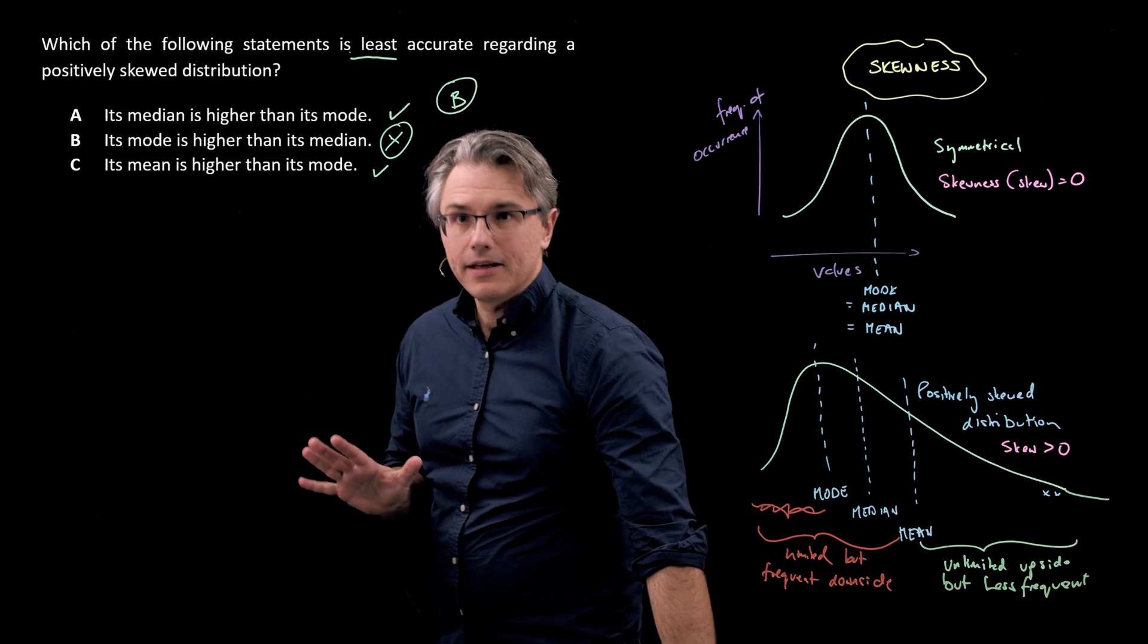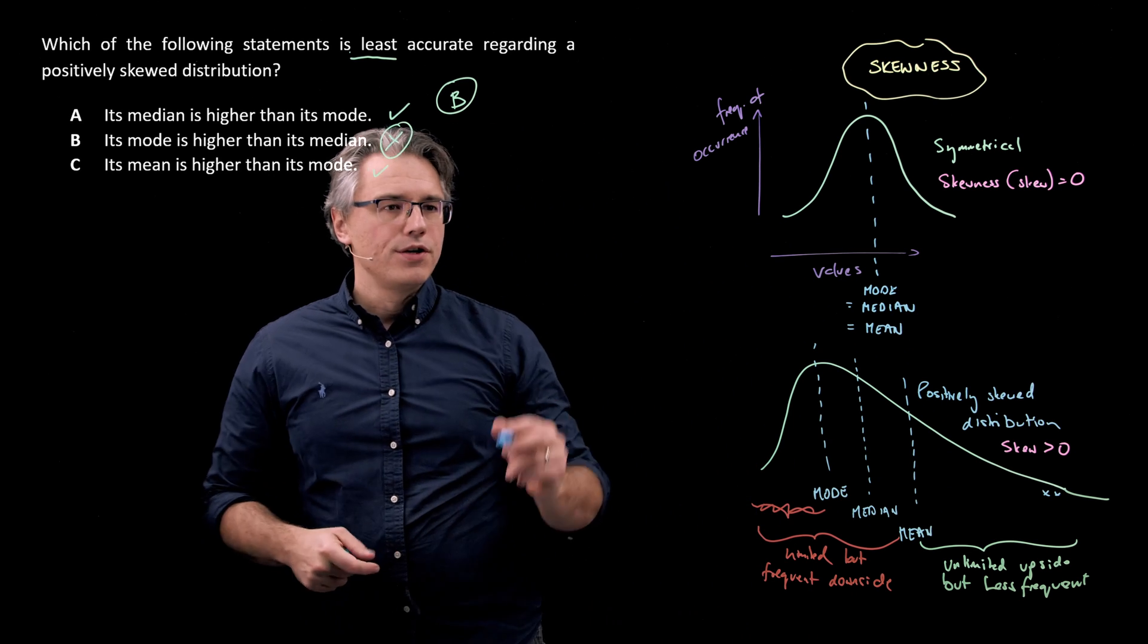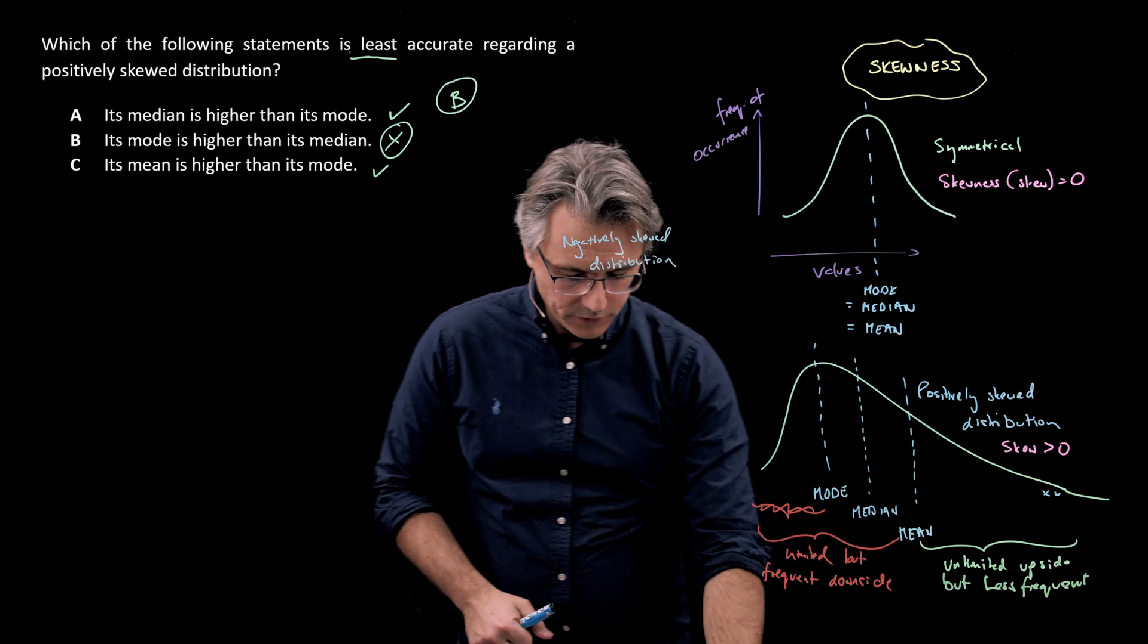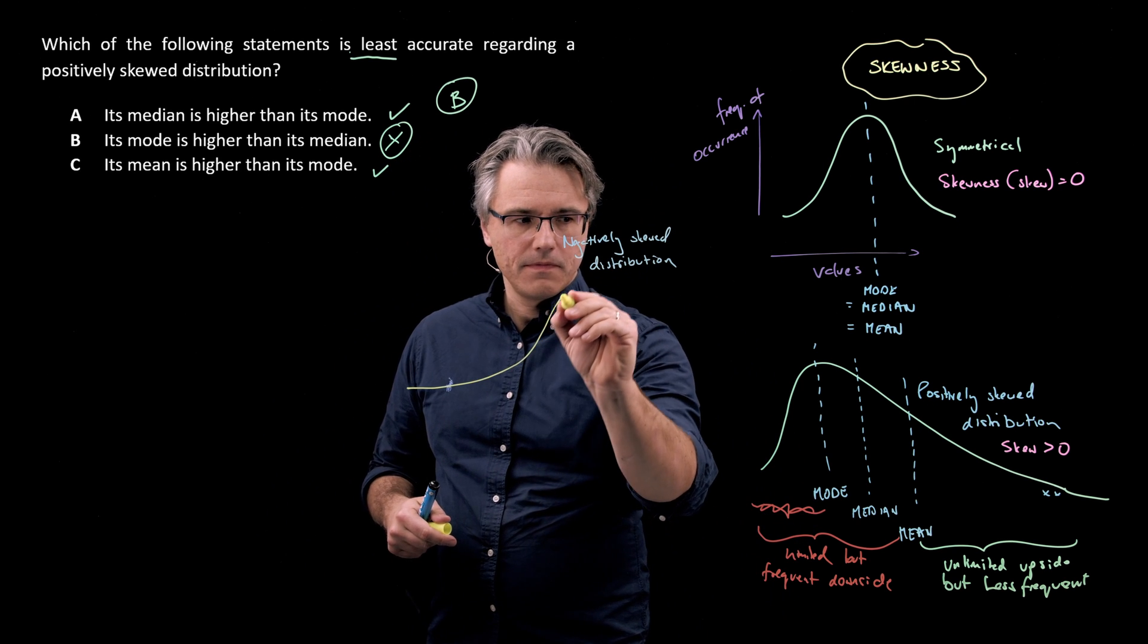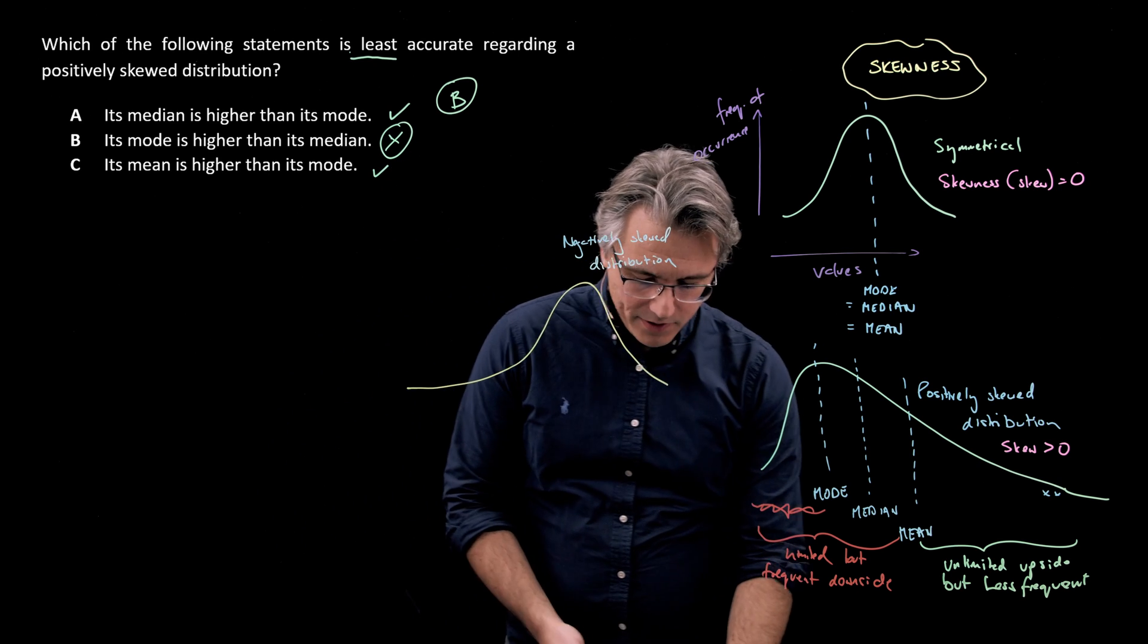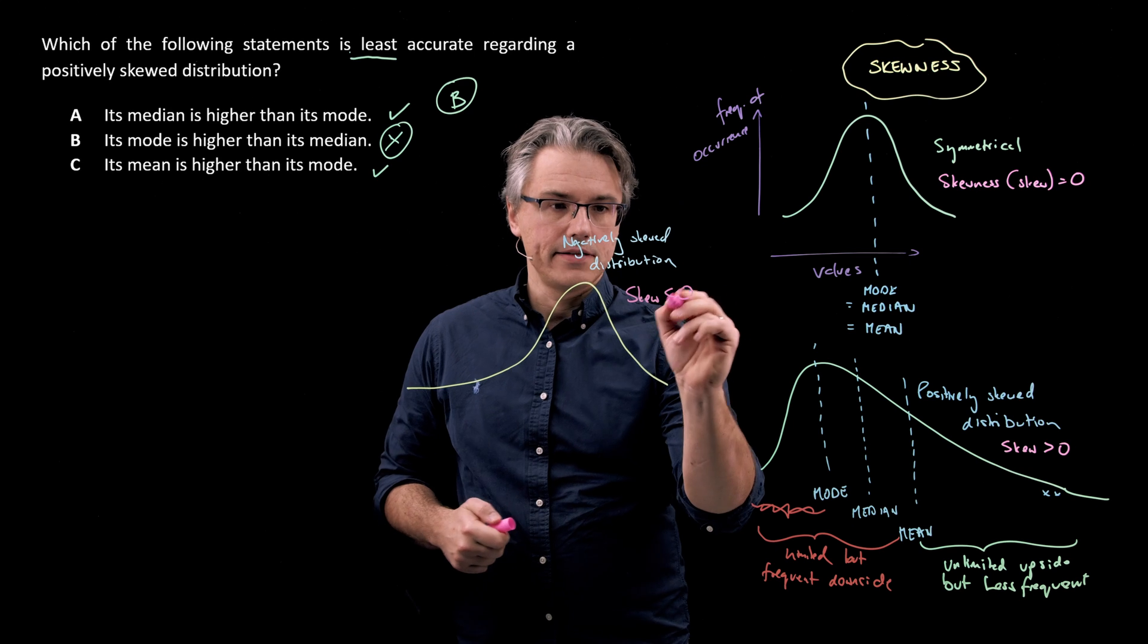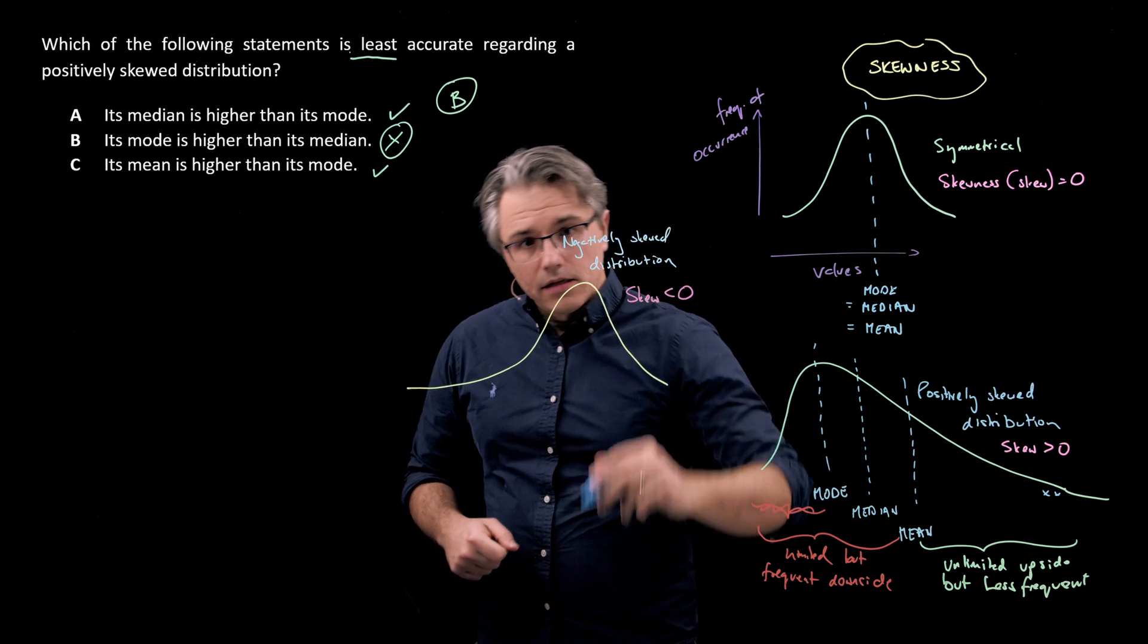Let's now translate this and complete the picture by showing you a negatively skewed distribution. And with this one, as you can imagine, we're going to have a long tail to the left. So something that looks like this. And once again, identify - well, let's write that the skew parameter or skewness in this case is indeed negative, so less than zero.